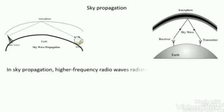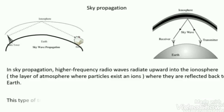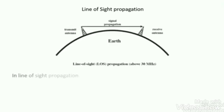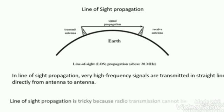The next propagation type is sky propagation. In sky propagation, higher frequency radio waves are used. The signals can reach up to the ionosphere of the earth. The ionosphere always contains ions, which reflect signals back to the earth. This type of transmission provides greater distance with low power consumption. The third type is line of sight propagation, which always supports very high frequency signals. These signals are transmitted in a straight line directly from one antenna to another antenna.